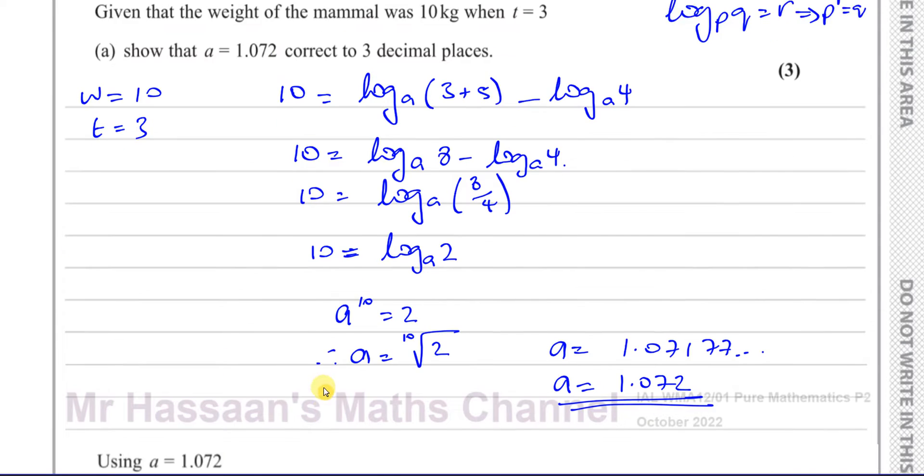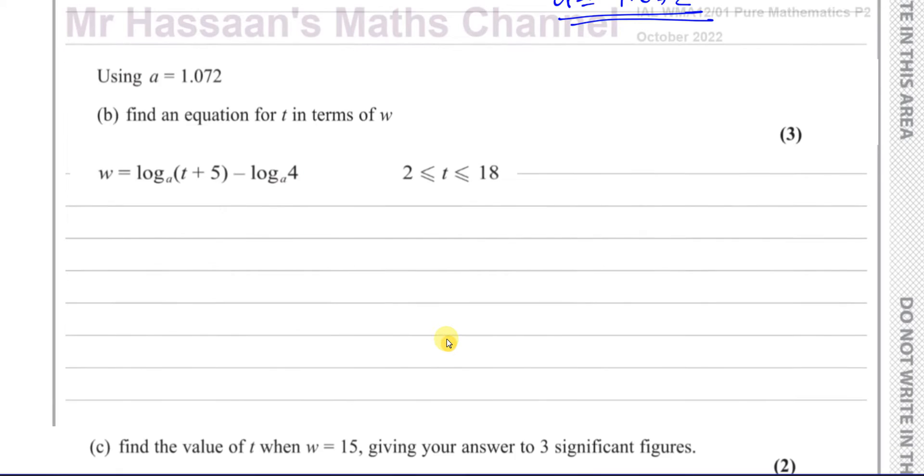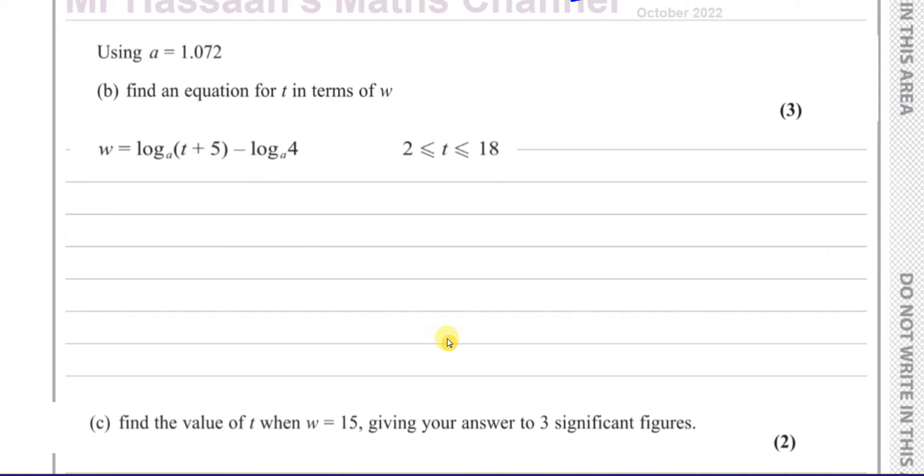So we've done that. That's part a. Then it says, using a equals 1.072, find an equation for t in terms of w. So we've got to take this equation and rewrite it to make t the subject. It has to say t equals something.